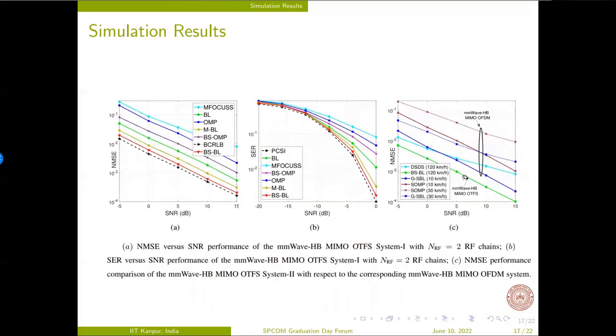These are the results for MMWave HB MIMO OTFS systems where the block sparse Bayesian learning yields the best performance. Furthermore, in the last figure, it is also demonstrated that the DD domain CSI estimation accuracy obtained for the MMWave HB MIMO OTFS systems in high mobility scenario is significantly better than their OFDM counterparts.